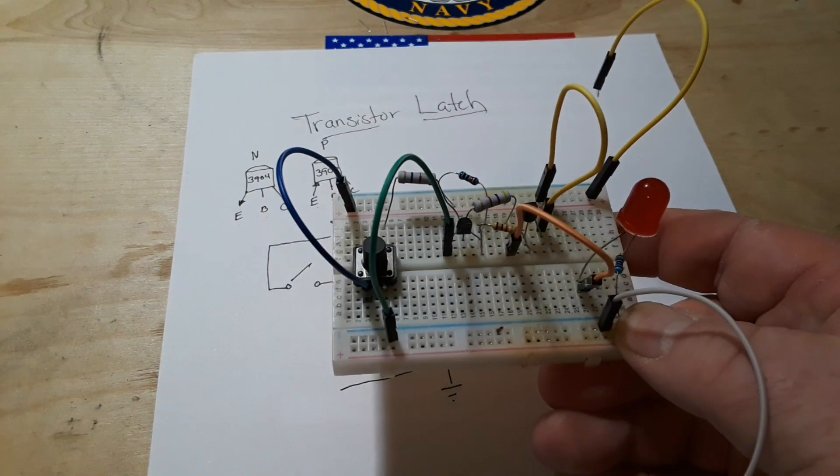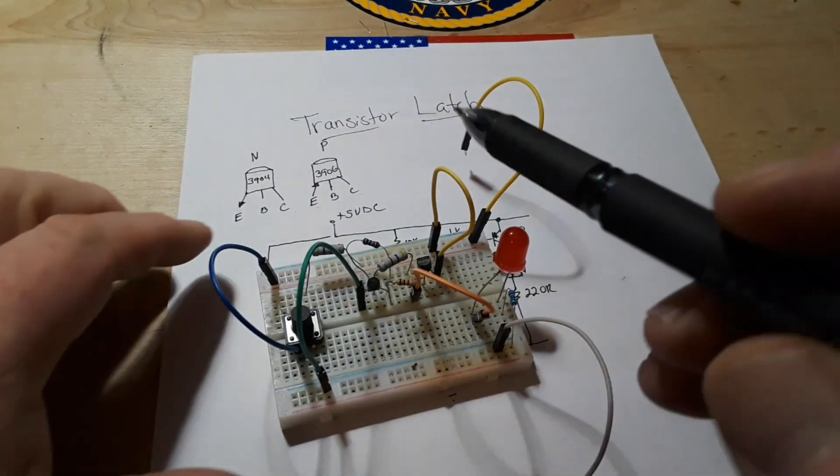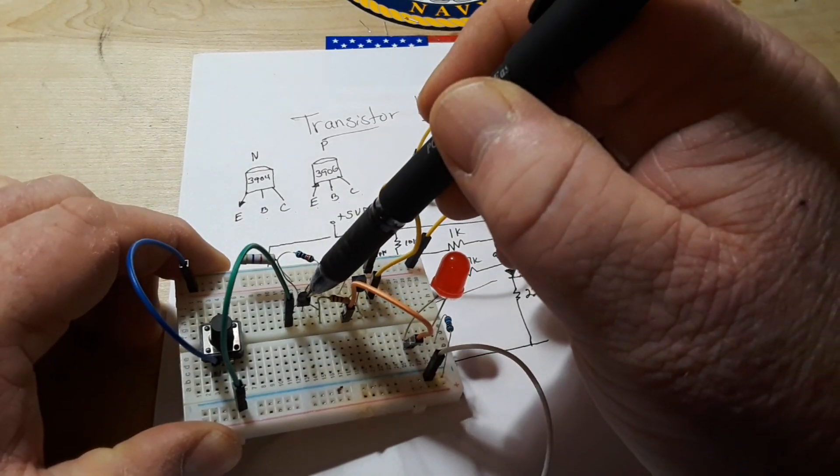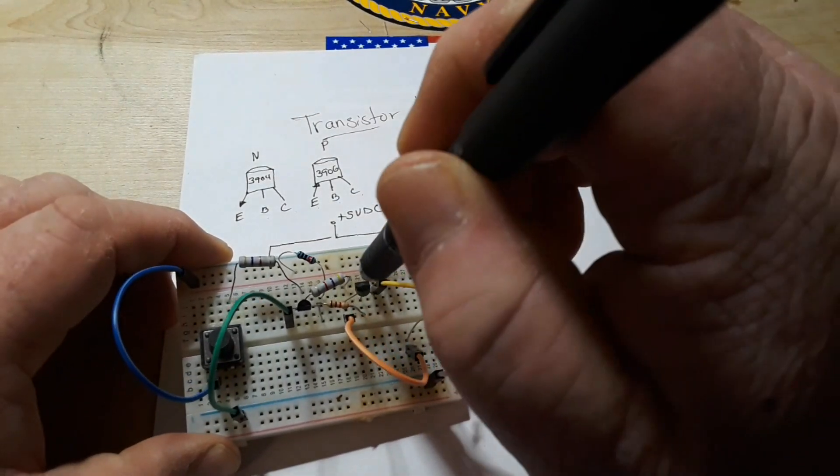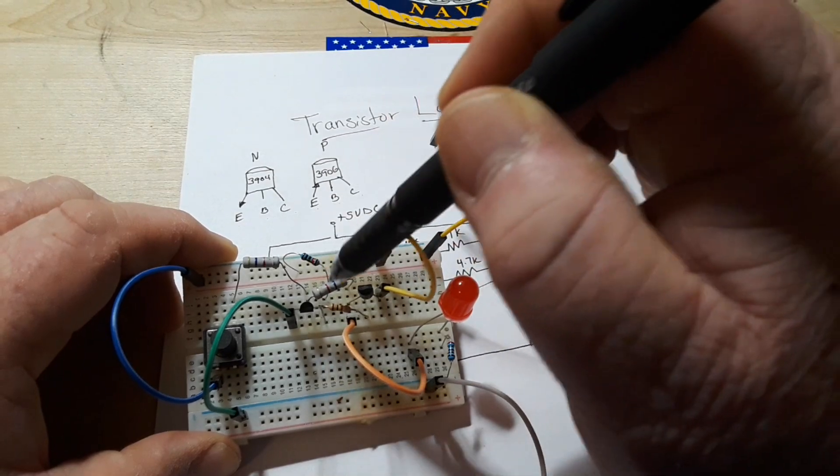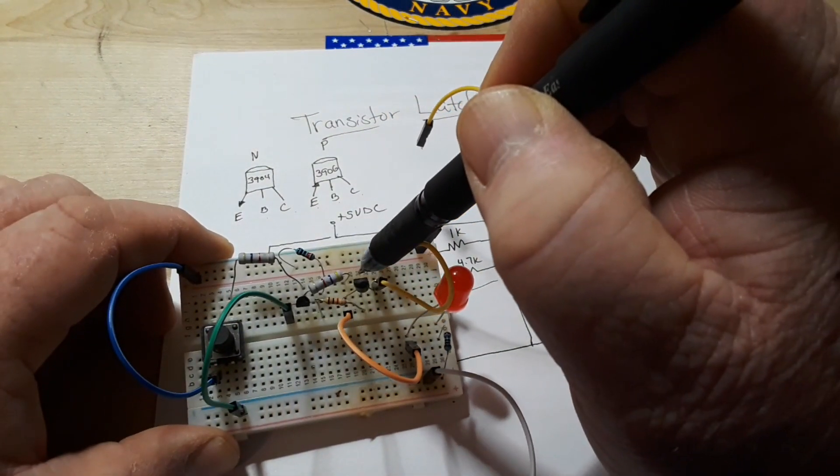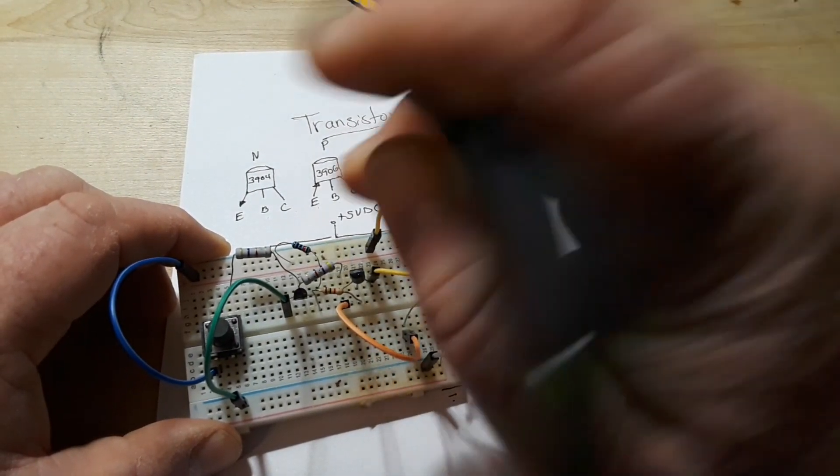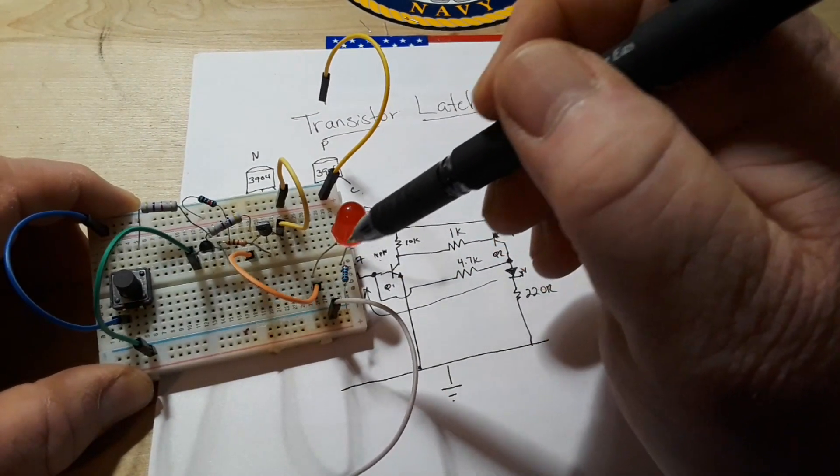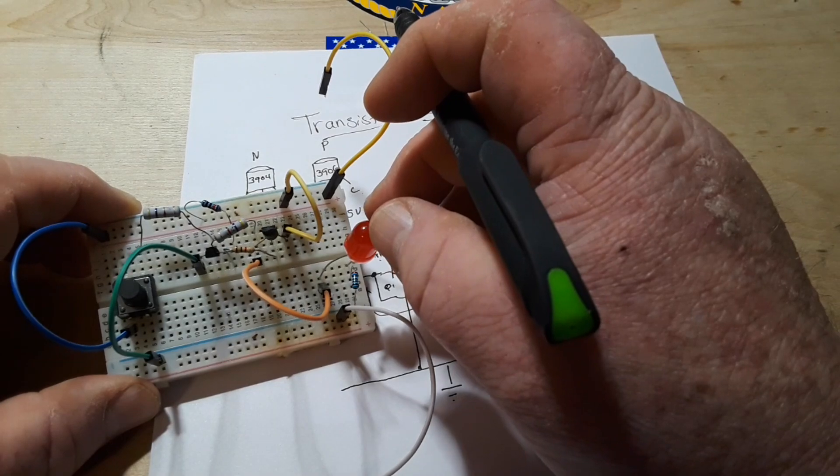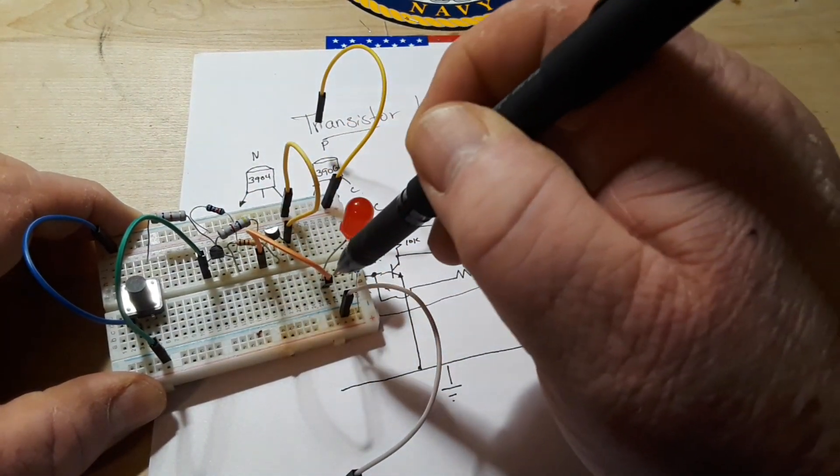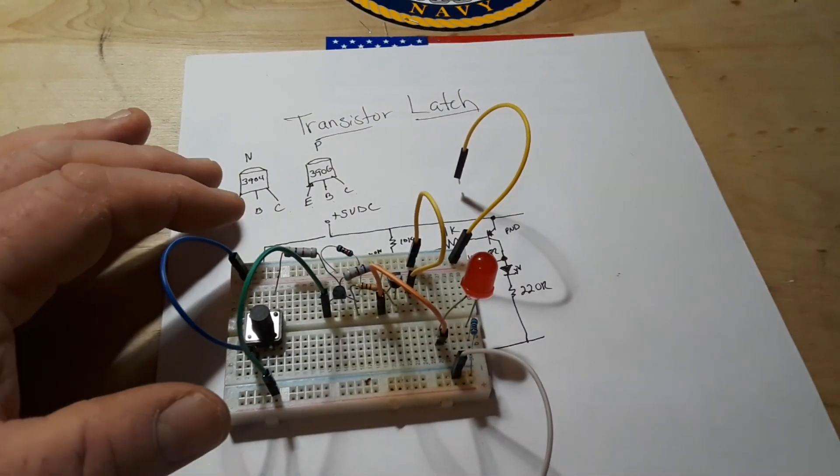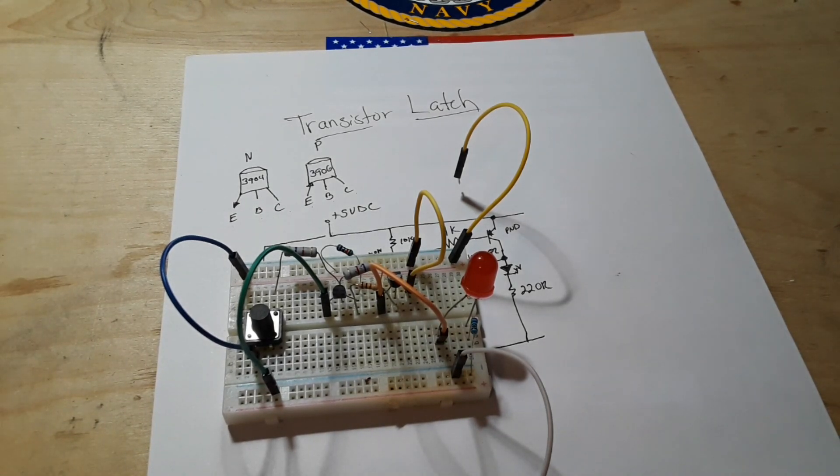So here is our circuit there's our 10k resistor. There's our 3904. There's our 1k resistor 3906. Our two 4.7k's one coming from the switch the other one coming off the PNP over to the NPN to the base. That's our feedback loop right there. And then we have our output going over here to the LED which goes through a 220 ohm resistor to ground.